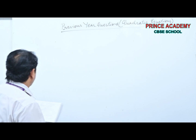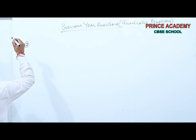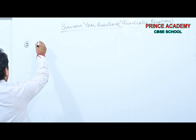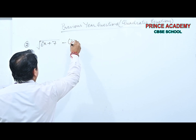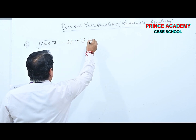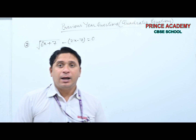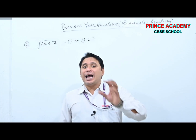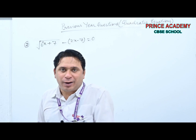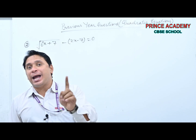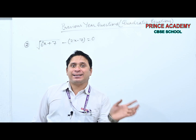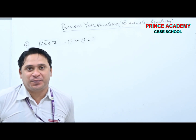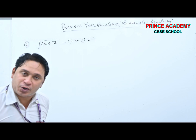Question 2 statement: √(6x+7) − (2x−7) = 0. This is the same type as the last question — we have two terms where squaring directly would give a root inside A+B. So first shift 2x−7 to the right, changing the minus sign to plus.